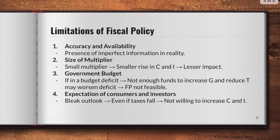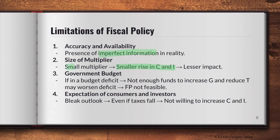Now let's look at the limitations of fiscal policy — these also apply to monetary policy and supply-side policy, as every policy has its limitations. First, imperfect information exists: the government may increase spending by too great an amount, leading to issues on the AD side. Second, the size of the multiplier matters. A smaller multiplier means a smaller rise in C and I will have a smaller impact on real GDP. If the recession rate is greater than the rate of rise in C and I, the economy may still decline.